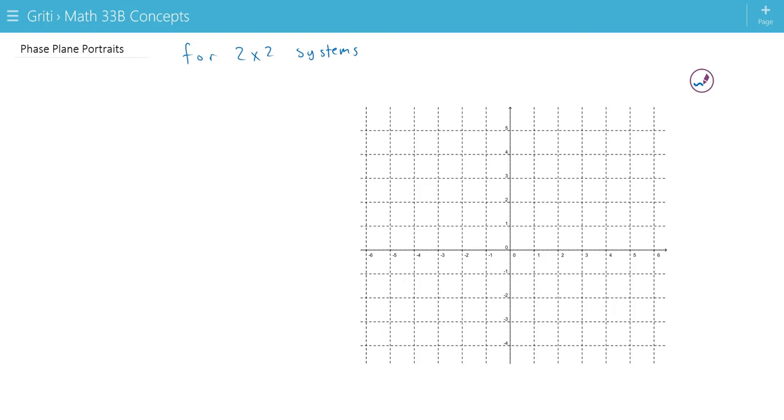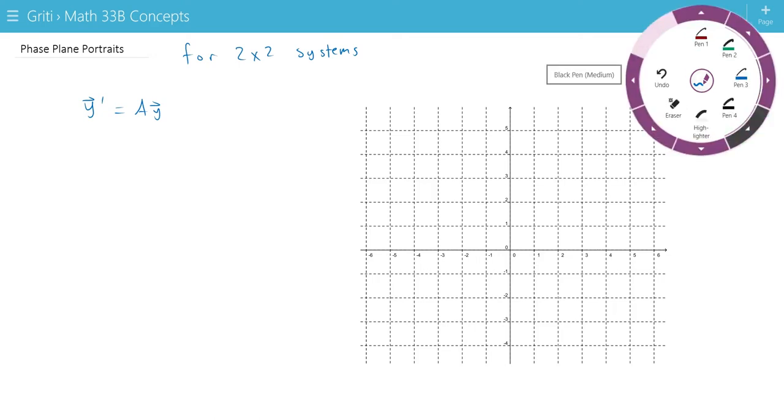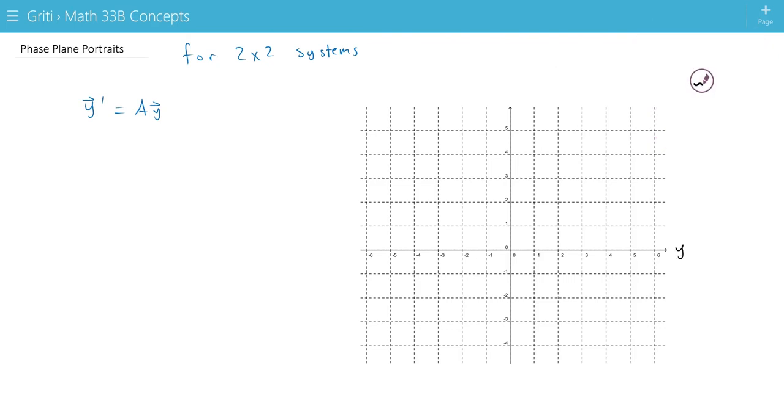They're how we graph the solutions to the equation y prime equals Ay, where y and y prime are vectors. The way we graph it is on our axes we have y1, the first component of y. If you remember, y is equal to components y1 and y2. We put y1 on the x-axis and y2 on the y-axis. And y is a function of time, so each of the components are functions of time.